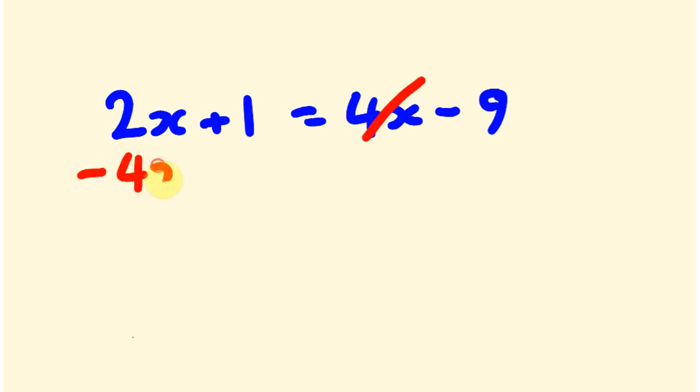So say we had 2x plus 1 equals 4x take away 9. Okay, so we're going to do that same thing. I like to get all the x's on this side and all the other numbers on this side, so we'll do it like that. So I'm going to get rid of this 4x and get it on this side. So to get rid of it, it's a positive at the moment, I'm going to take it away. I'm going to take it off this side. So minus 4x. All right, I want to put this 1 on this side. It's a positive 1 at the moment, so I'm going to take it off both sides. So take off 1.